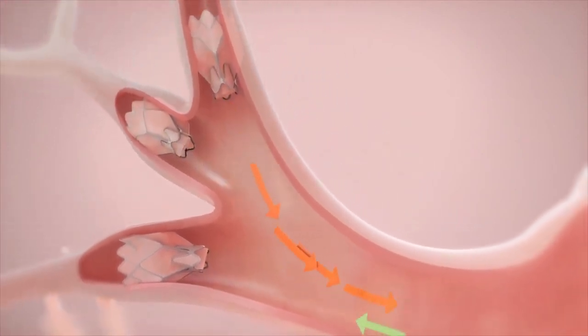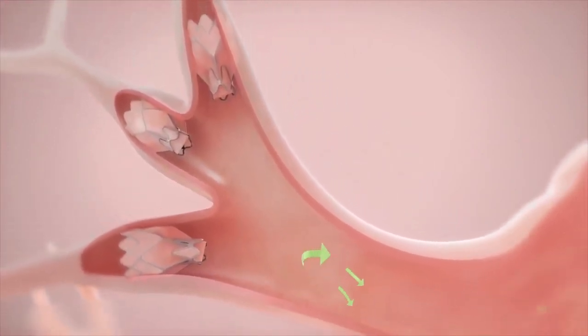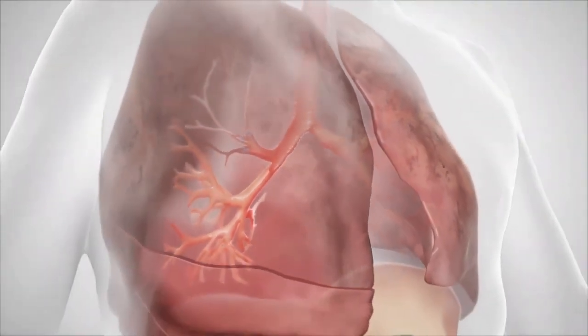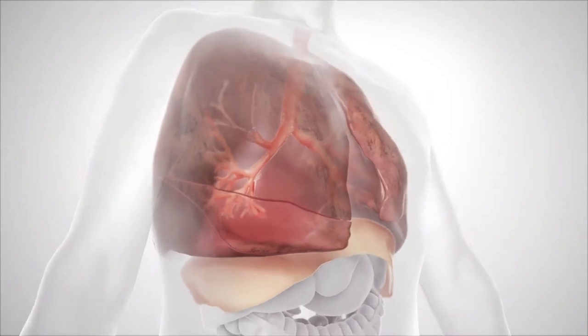Trapped air in the treated lobe escapes through the Zephyr valves until the lung volume of the treated lobe is reduced. The valves can be removed and replaced if needed.